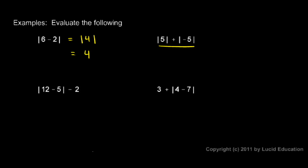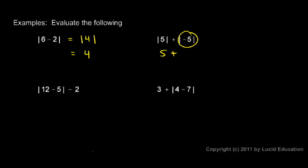In this next example on the right here, the absolute value of 5 plus the absolute value of negative 5. I'm going to rewrite this, removing the absolute value signs. So I'll evaluate this and then that, and then I'll add them together. The absolute value of 5 is simply 5, and I still have my plus sign. And then the absolute value of negative 5 is also 5. So I get 5 plus 5, and that's 10.